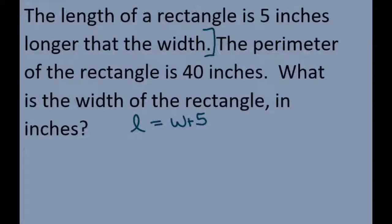So whatever the width is, say it was 10, 10 plus 5 would give you 15 for the length. So the perimeter is 40 inches. The perimeter equals 40. We know the formula for perimeter is 2L, 2 times the length plus 2 times the width.